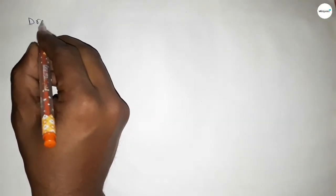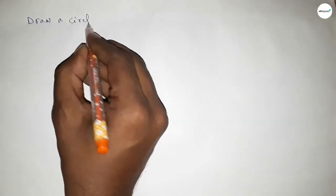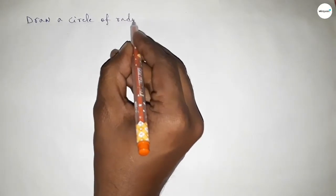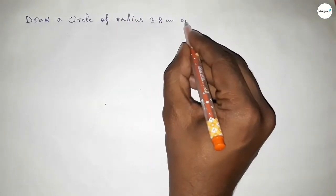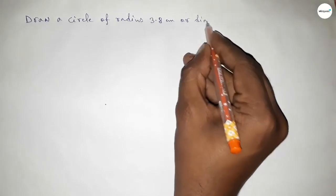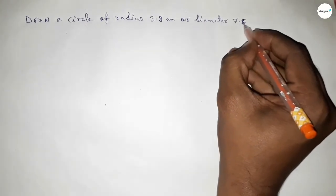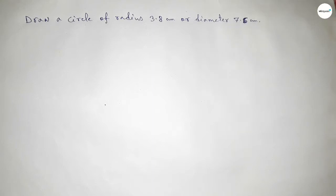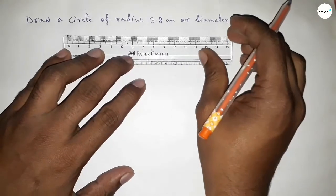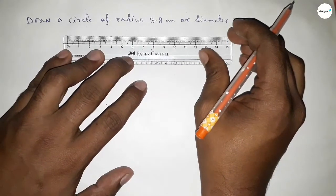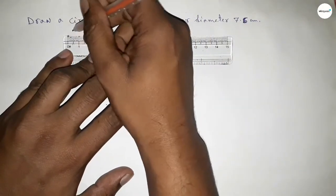Hi everyone, welcome to Essay Share Classes. Today in this video we have to draw a circle of radius 3.8 centimeters or diameter 7.6 centimeters. So let's start the video. First of all, drawing here the distance 3.8 centimeters.